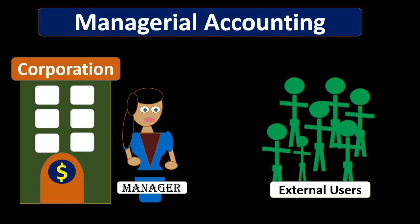When considering managerial accounting, we can compare it to the other major form of accounting, which is financial accounting. There will be overlap between the two, but the major difference is that managerial accounting's main focus is for management's use — management's goal to make decision-making for the company. So managerial accounting is geared towards decision-making processes, making reports for management.